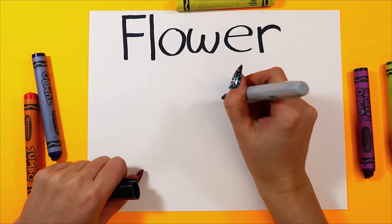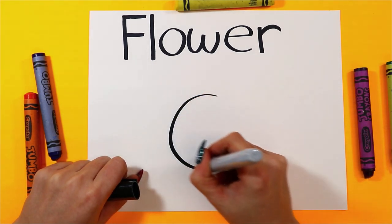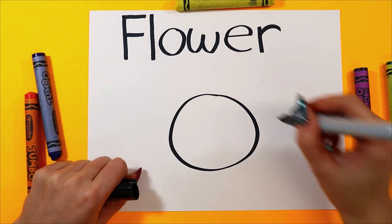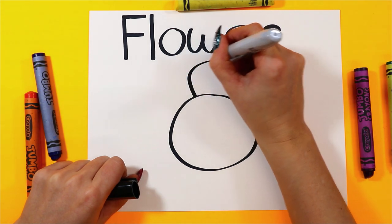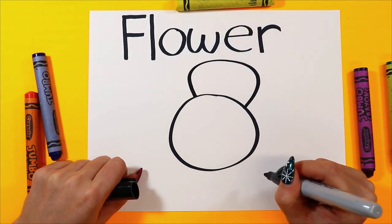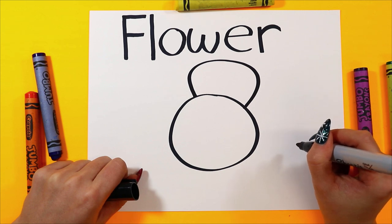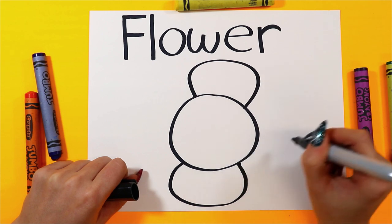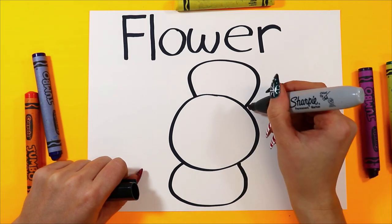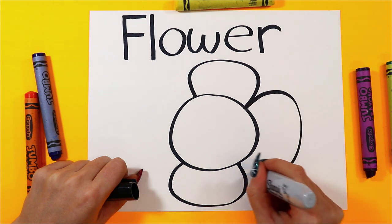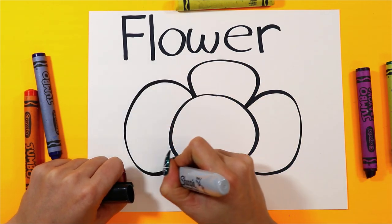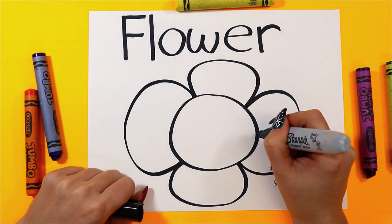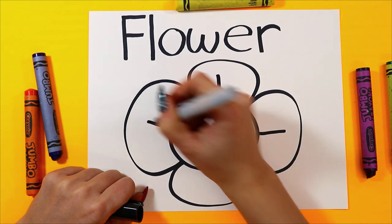Let's draw a flower. Let's begin with a nice big circle. We will draw a curving line at the top for the first petal. Let's draw a curving line at the bottom for a second petal. And we'll draw a petal on each side with a nice big curving line.